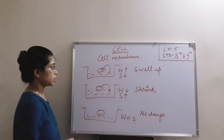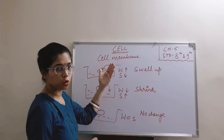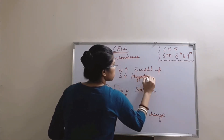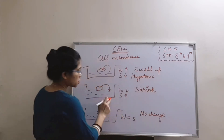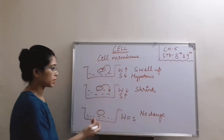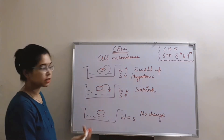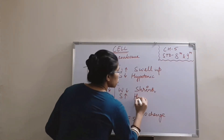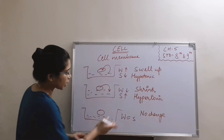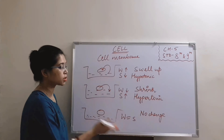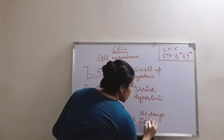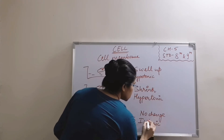The type of solution in which water particles are more is called a hypotonic solution. The solution in which water particles are less and solute particles — sugar or salt — are more is known as a hypertonic solution. The last type, in which water and sugar concentration are both the same, is known as an isotonic solution.